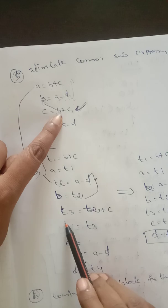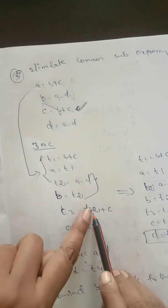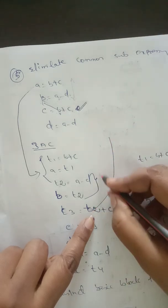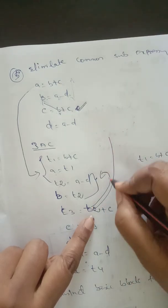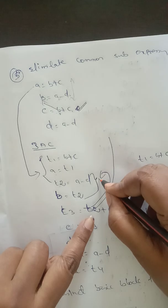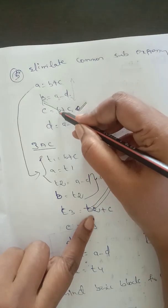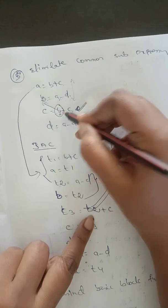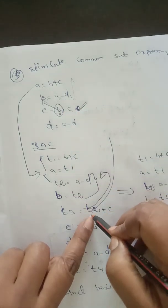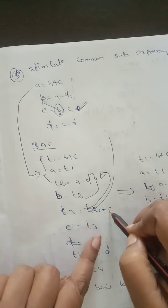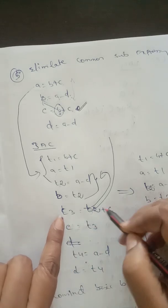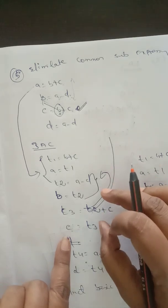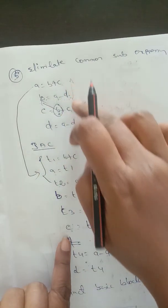So t3 equal to t2 plus c, where t2 is a minus d — that is the recomputed b value. Then we assign that result into variable c. So c equal to t3. This gives us the three-address code for the third statement.